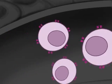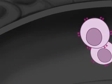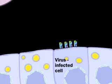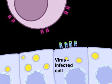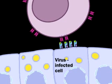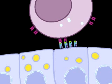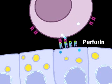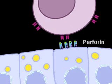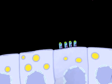The infected cells display viral antigen on their surfaces. When an activated cytotoxic T cell binds specifically to the displayed antigen, the T cell releases a protein called perforin, which perforates the plasma membrane of the infected cell, allowing water to enter and causing it to lyse.